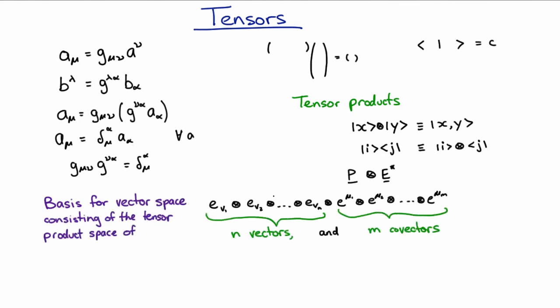Okay so that doesn't seem like I've defined it very well but in fact that tells us everything we need to know. We have strings like this and strings like that. If that's a basis then a completely general tensor is going to be a linear superposition of those objects.